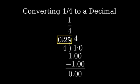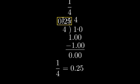Therefore, the decimal form of one-fourth is zero point two five. To summarize, we've converted the fraction one-fourth to its decimal form.